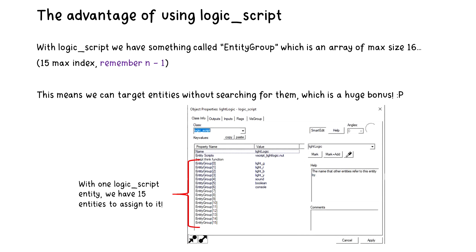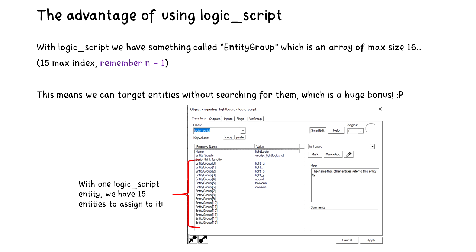The advantage of using the logic script is that it has something called an entity group. It has an array of max size 16 and its index max is 15 — remember with arrays we do n minus 1. This means we can target entities without searching for them, which is a huge bonus. So we can reference up to 15 entities per one script.